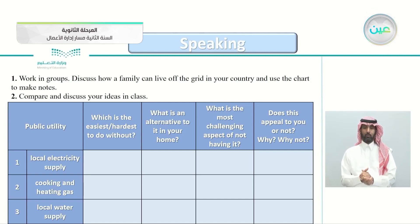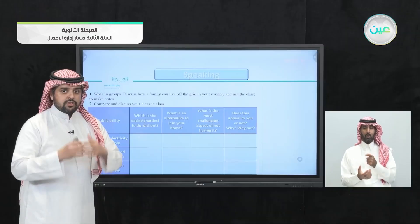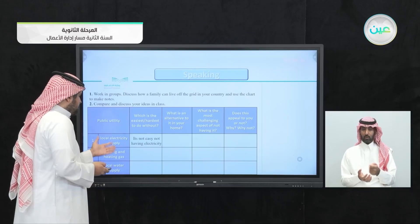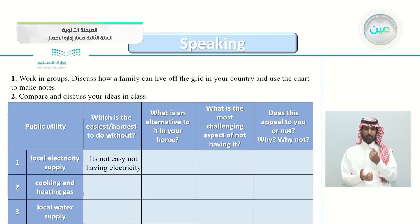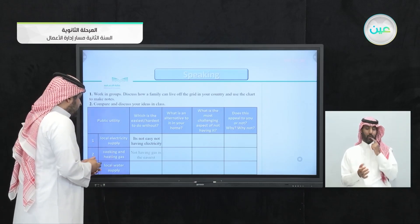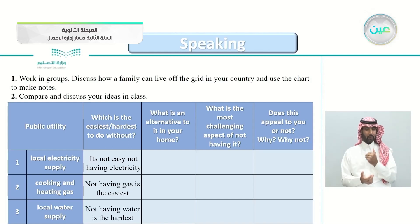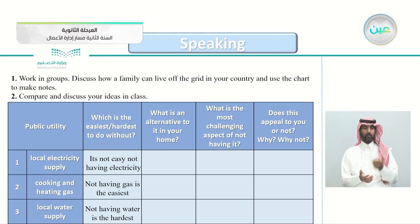For column one — which is easiest or hardest to do without — the teacher gives an example: not having electricity is not easy, especially if you live in a city. Not having cooking and heating gas is the easiest of the three. The hardest would be not having a local water supply.